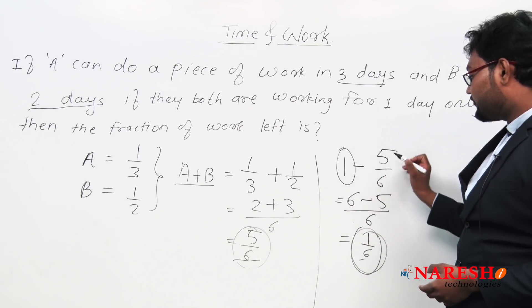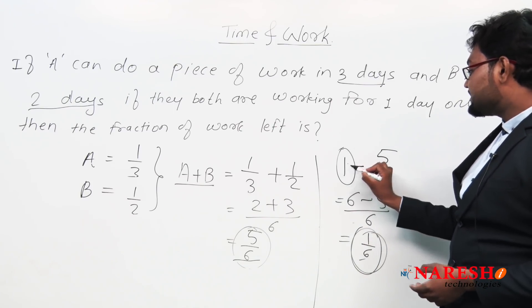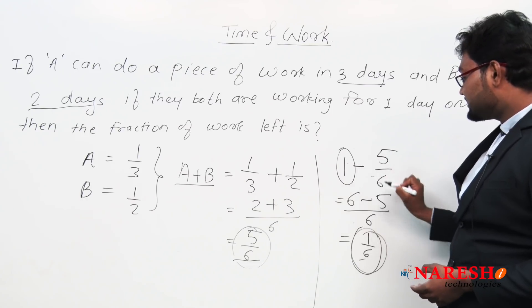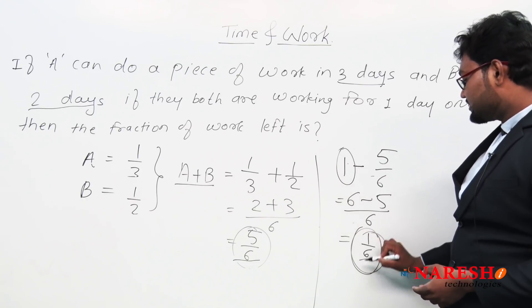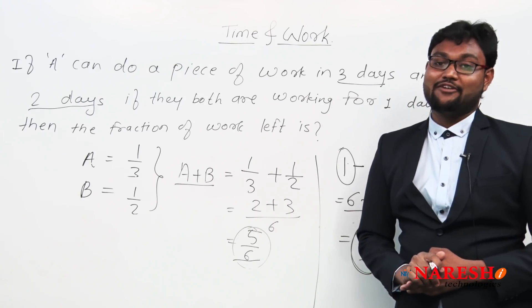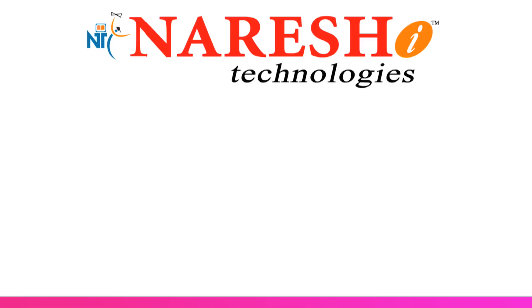To recap: one-day work of A is one by three, one-day work of B is one by two, combined one-day work is five by six. Remaining work is one minus five by six, which equals one by six. This is the time and work concept explained through two questions. For more questions, please wait a few days. Thank you for watching this video under Naresh IT.